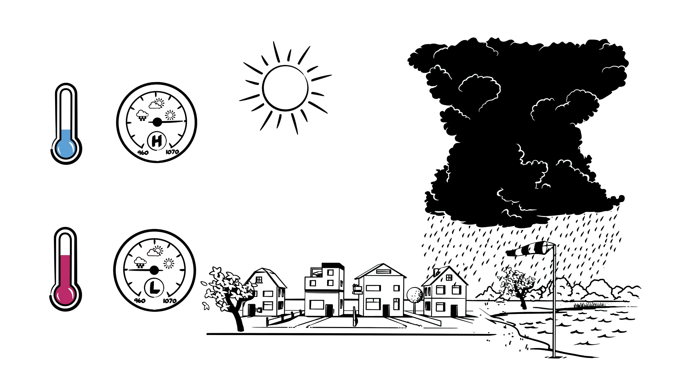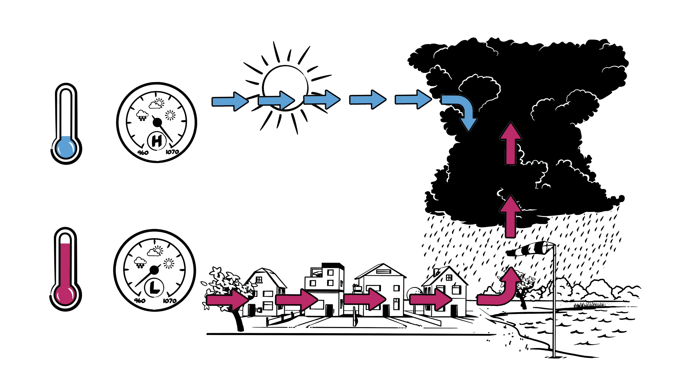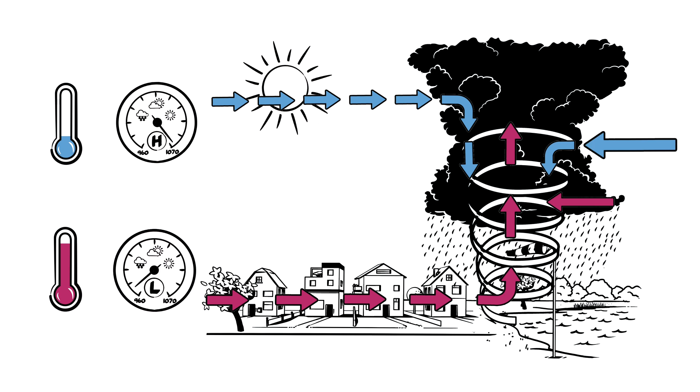You can learn more about that in our videos on wind and thunderstorms. If these temperature differences are very extreme, this creates a huge pull where the warm and moist humid air on the ground rises extremely fast. If winds of varying strengths from different directions then hit the mass of clouds, they start to turn in a funnel shape towards the ground. The rotation direction is determined by the strongest wind.